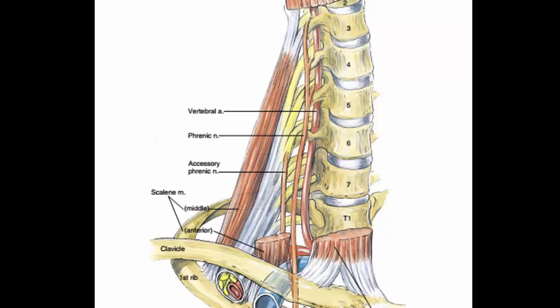In this picture the brachial plexus can be seen emerging between the two scalene muscles — the anterior scalene and the middle scalene. Therefore we think that nerve roots at the interscalene level must always lie between these muscles. However this may not always be the case in all patients.